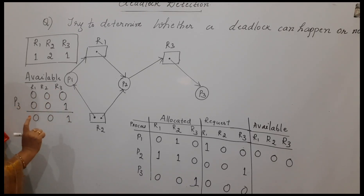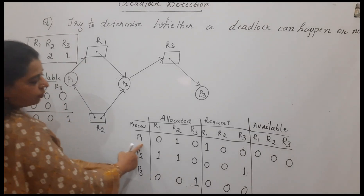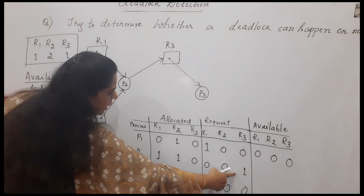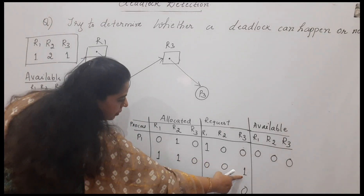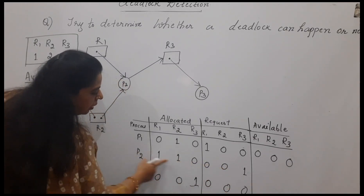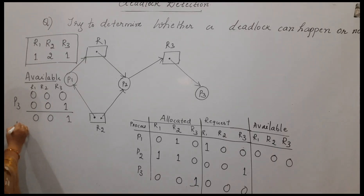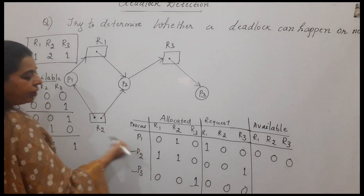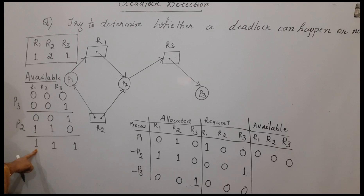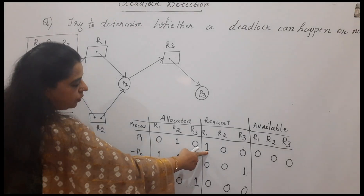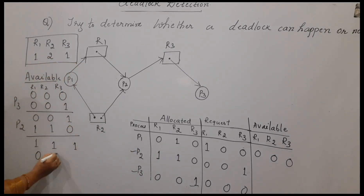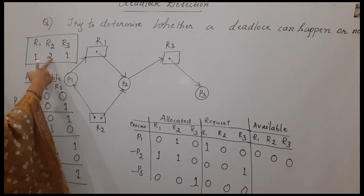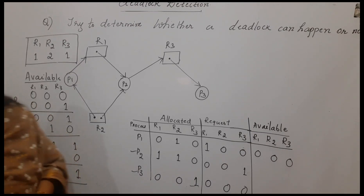With R3 now available, P1's request for R1 still cannot be satisfied, but P2's request for R3 can be satisfied. The system grants R3 to P2, P2 uses it and returns all its earlier assigned resources back to the system — returning 1, 1, 1. Now the system has 1, 1 available. P1 is requesting R1, and yes the system now has one instance of R1, so it grants it to P1. P1 makes use of it and returns its assigned resources, leaving the system with 1, 2, 1.